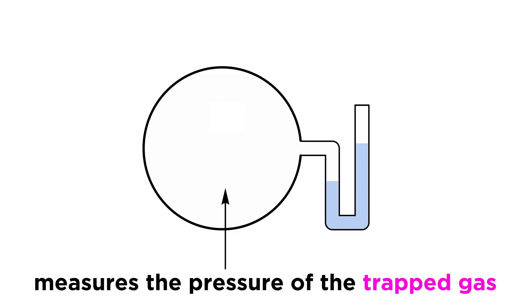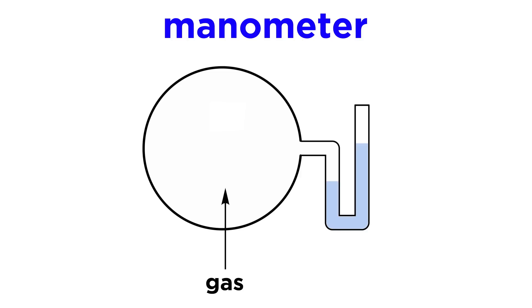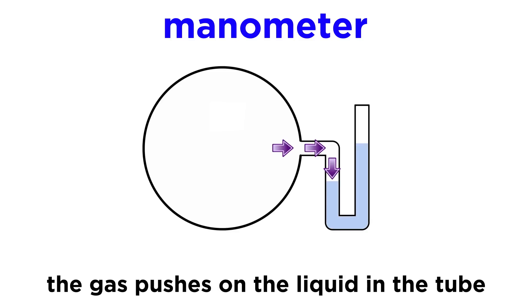There is a device that is similar to a barometer, and it is used to measure not atmospheric pressure, but rather the pressure exerted by a gas that is trapped in a container. This is called a manometer. In a manometer, there will be a bulb containing some gas. This connects to a U-shaped tube that will contain some non-volatile liquid, like mercury.